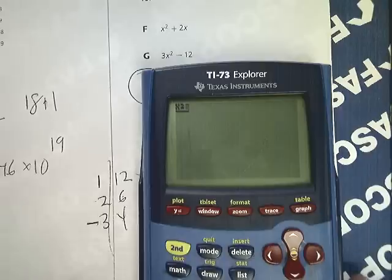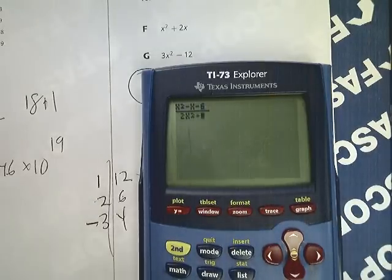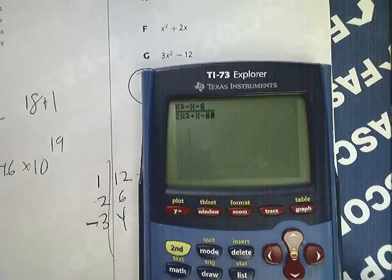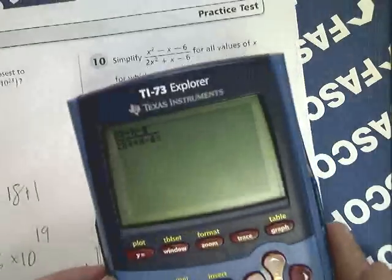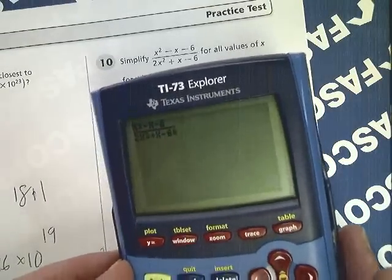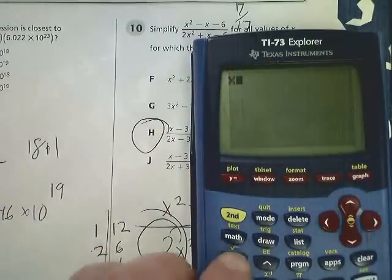A linear function. I typed it in exactly like it's shown in the question. I'm going to hit enter. 7 over 17. Now, I just go through and try the answers to see if it gives me 7 over 17.